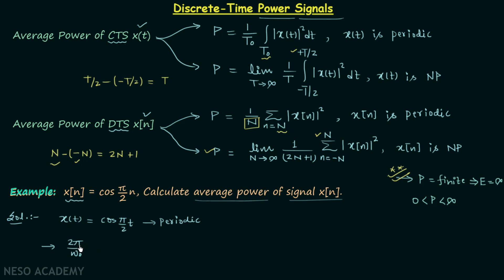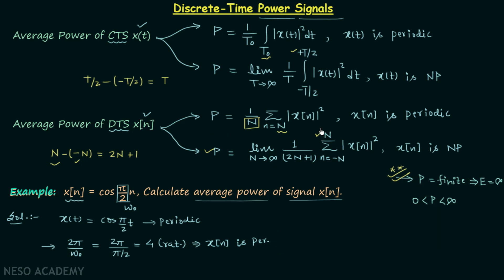We check whether 2π/ω₀ gives a rational or irrational value. If rational, the signal is periodic; if irrational, it is non-periodic. Here ω₀ = π/2, so 2π divided by π/2 equals 4, which is rational. This implies the discrete time signal x(n) = cos(π/2 · n) is periodic, so we will use the periodic formula.